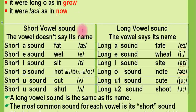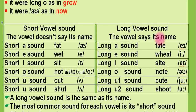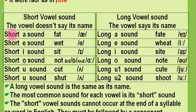A short vowel sound can be simply defined as the vowel doesn't say its name. But the long vowel sound can be simply defined as the vowel says its name. For example: short A vowel sound — 'fat'; long A vowel sound — 'fade'. Short E — 'wet'; long E — 'read'. Short I — 'sit'; long I — 'side'.